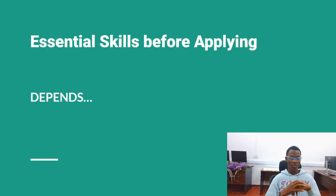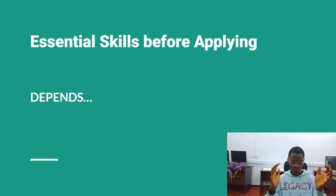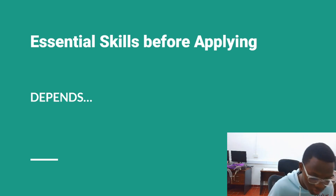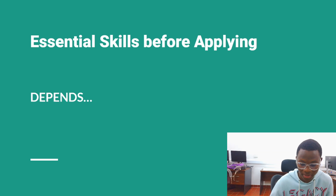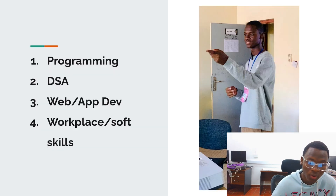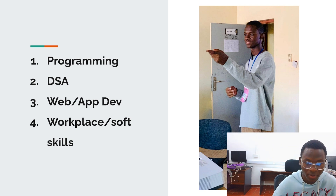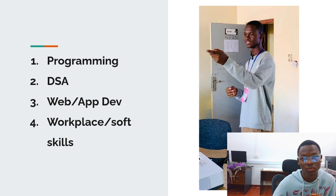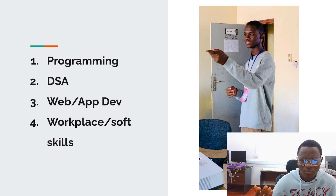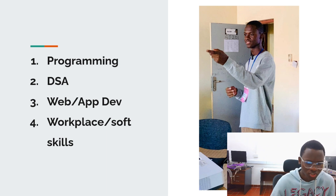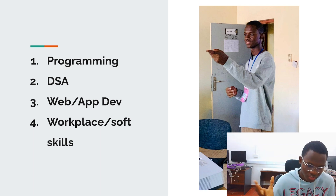Essential skills before applying. These are some of the skills you need before applying. Number one is programming. You do not need to be a programming expert, because the purpose of the internship is to teach you and expose you to all of these domains. But you need to understand at least Python, Java, or C++ alone. Just having that small programming experience is essential.